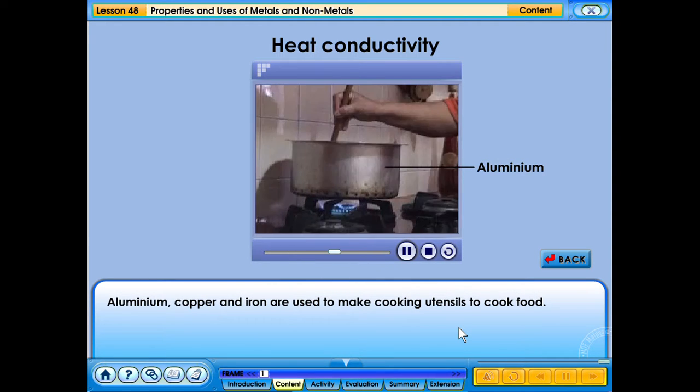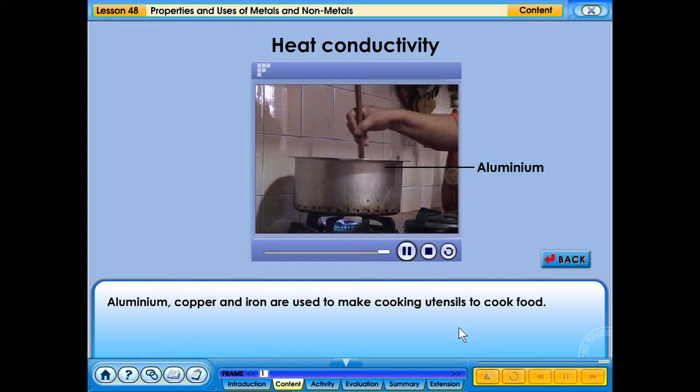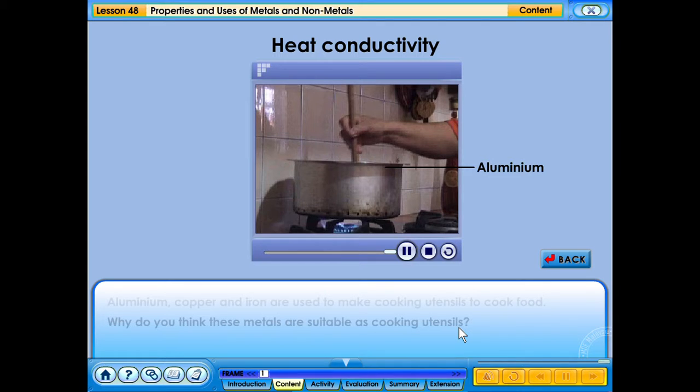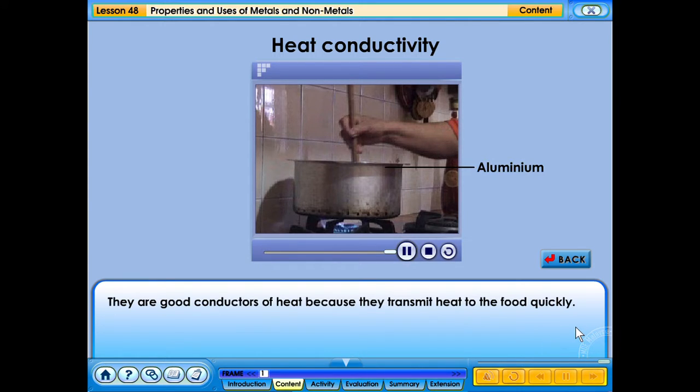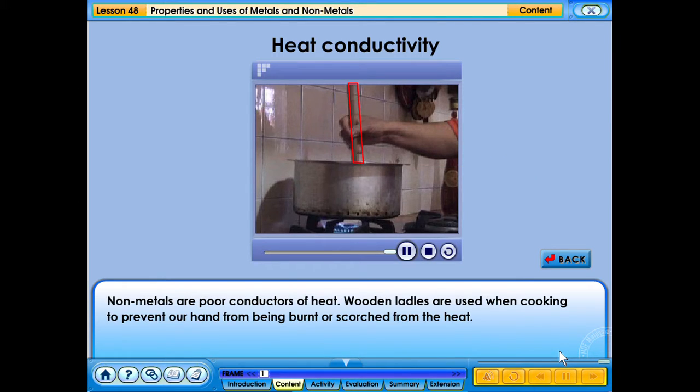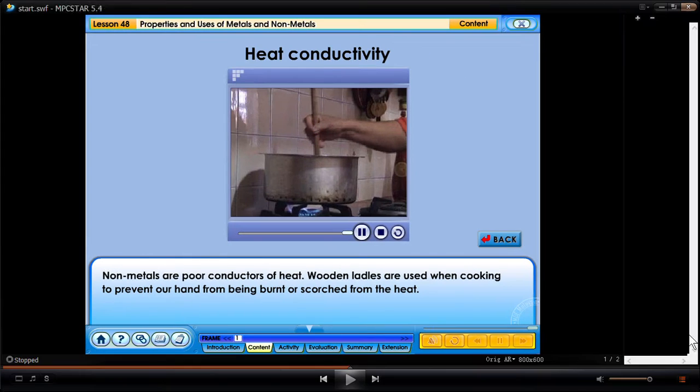Metals like aluminum, copper, and iron are used to make cooking utensils to cook food. Why do you think these metals are suitable as cooking utensils? They are good conductors of heat because they transmit heat to the food quickly. What about the heat conductivity of non-metals? Non-metals are poor conductors of heat. Wooden ladles are used when cooking to prevent our hand from being burnt or scorched from the heat.